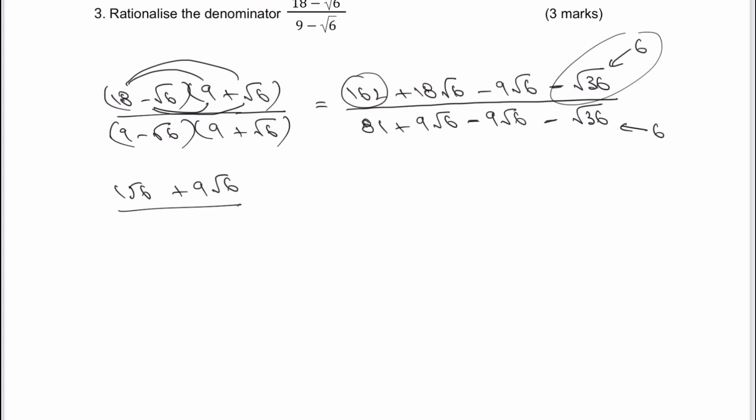And that's all divided by 81. And don't forget, those two numbers cancel themselves out. I've got 81 minus six, which is going to be 75.